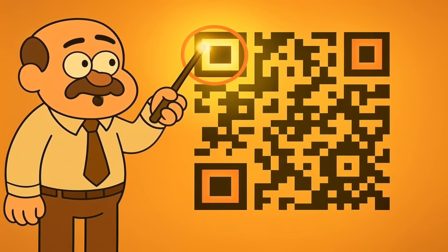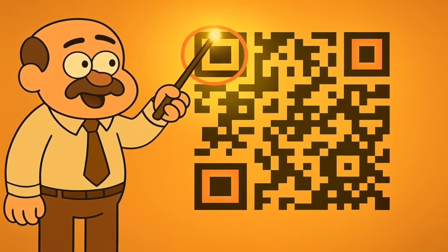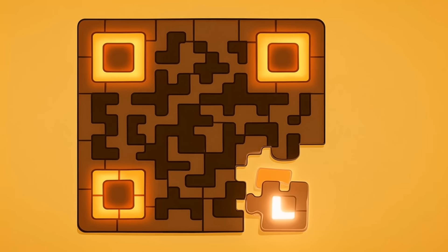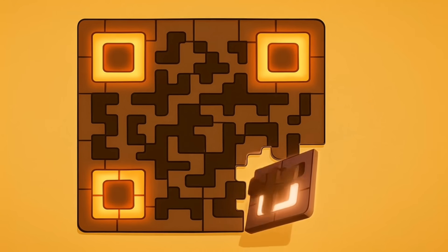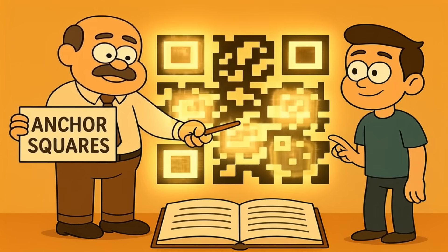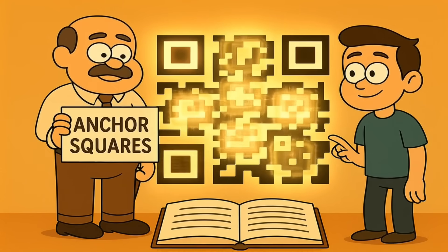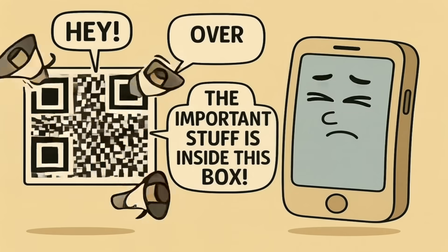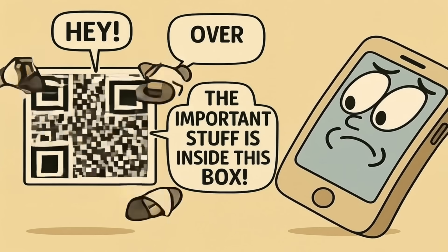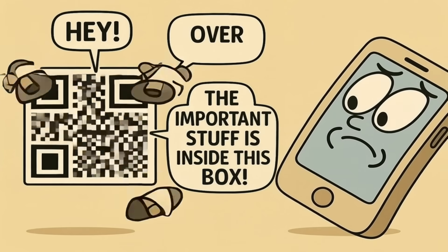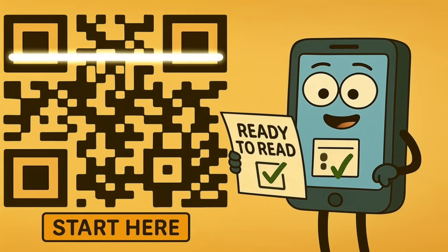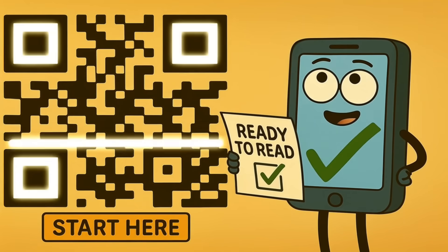The first thing you probably noticed are those three big, chunky squares — one in the top left, one in the top right, and one in the bottom left corner. These are the most important parts of the whole thing. They're the corner pieces of the puzzle, and their official name is Finder Patterns. But we can just call them anchor squares. They have one job and one job only: to scream at your phone's camera — hey, over here! The important stuff is inside the box! These three anchor squares tell your phone everything it needs to know to even begin reading.